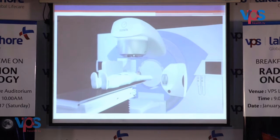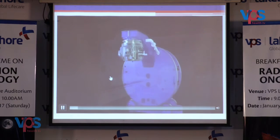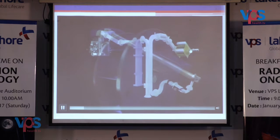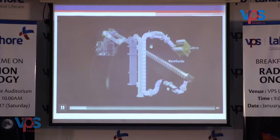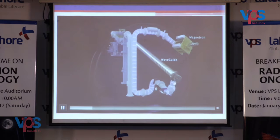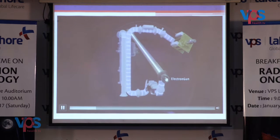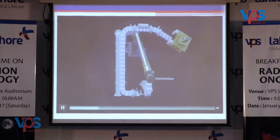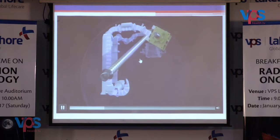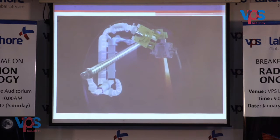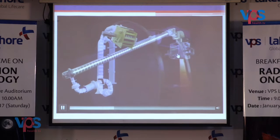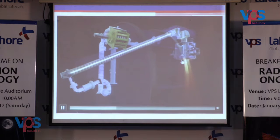This is the same Linear Accelerator present in our department. This is the magnetron which injects microwave radiation into the waveguide. The injection of microwave is synchronized with the injection of electrons from the electron gun. This is the waveguide structure where the electrons get accelerated. After gaining enough acceleration, electrons reach the treatment head where they are allowed to hit a target to produce high-energy X-rays.